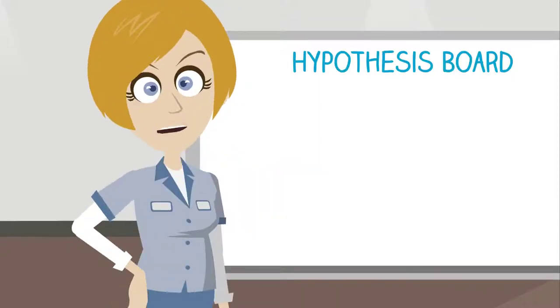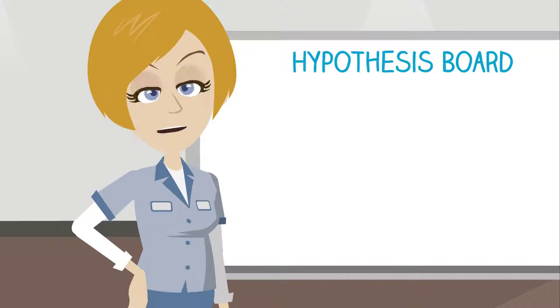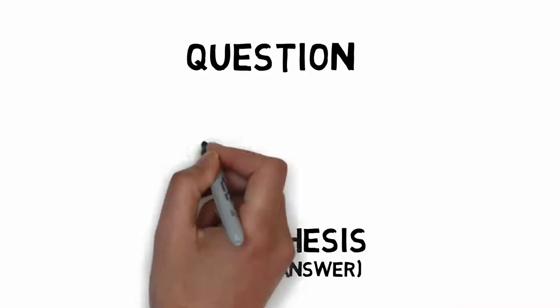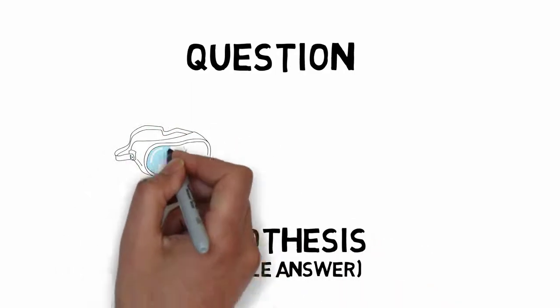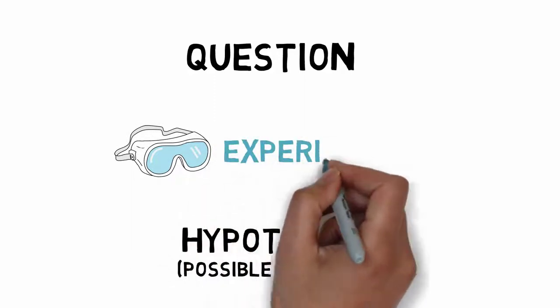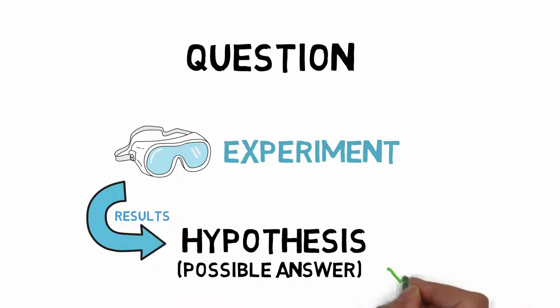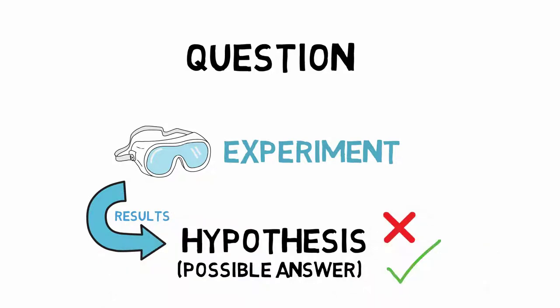Before we spring into action, let's review what a hypothesis is. Science is all about asking questions, and a hypothesis is a possible answer to a question we have. It doesn't necessarily have to be the correct answer. That's what the experiment is for. But a hypothesis should be testable, and the experiment we conduct should be able to prove or disprove the statement.